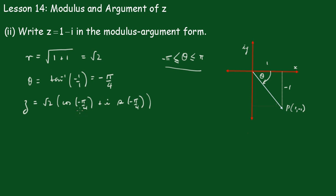Now, you may be tempted to change this into cos pi upon 4 minus i sine pi upon 4. Don't. You're writing it in the polar form, and you should rewrite this as in the simplified form of root 2. It'll be the cis of minus pi upon 4.